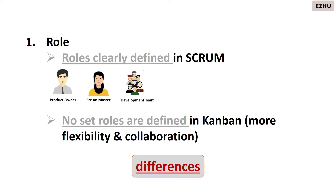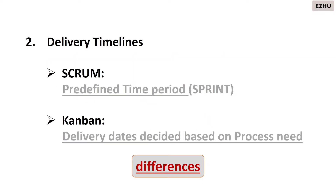Let us now look at the differences between scrum and kanban. First, roles: roles are clearly defined in scrum — product owner, scrum master, and development team. However, in kanban the roles are not defined; kanban teams are flexible and are expected to work collaboratively.